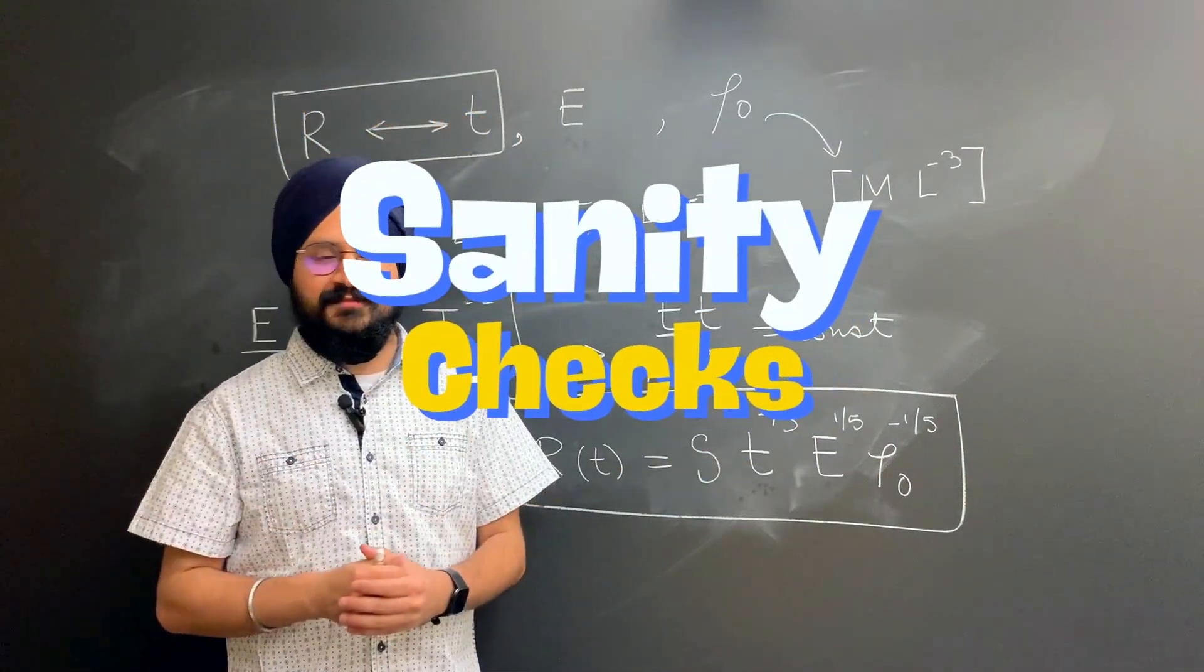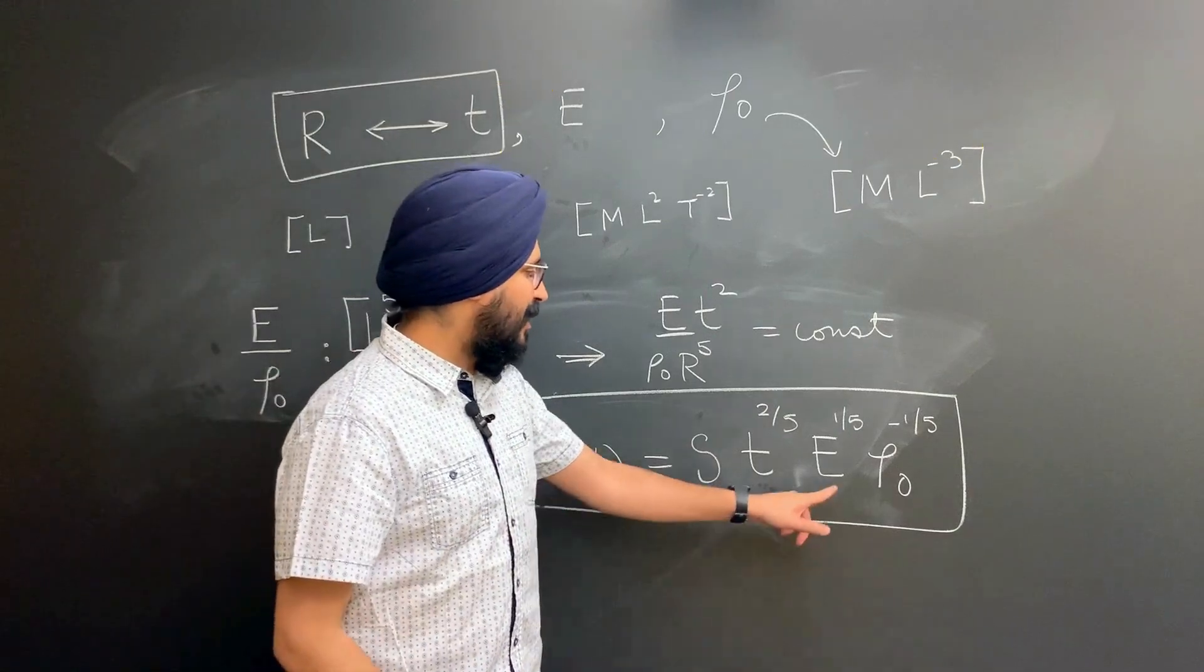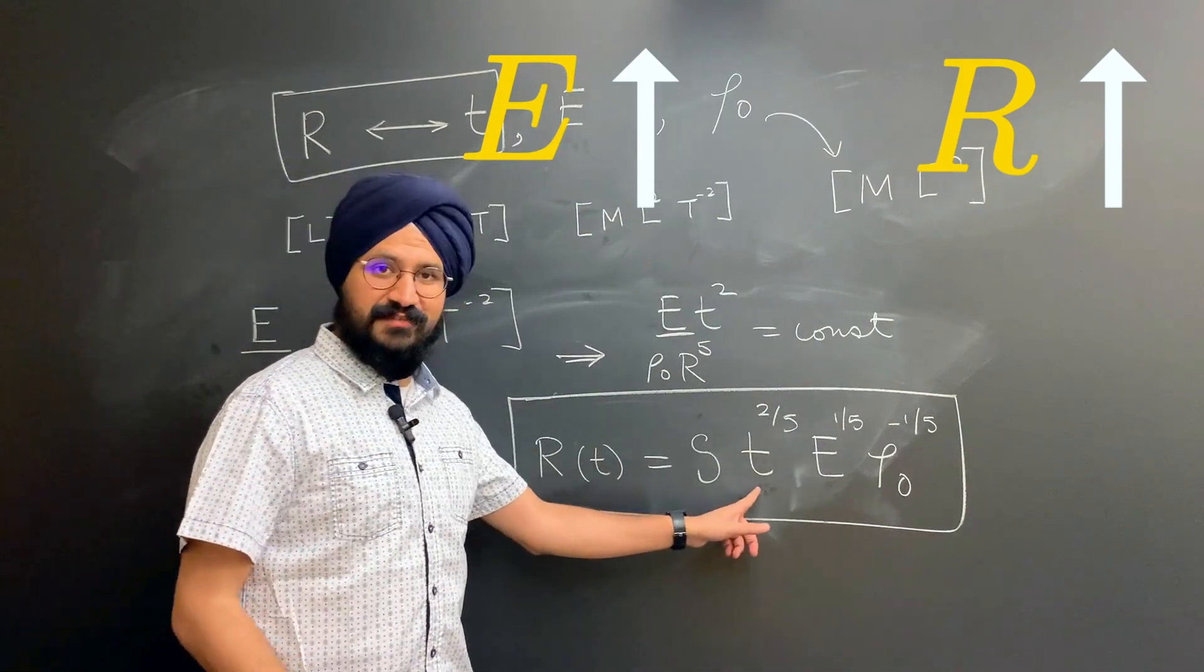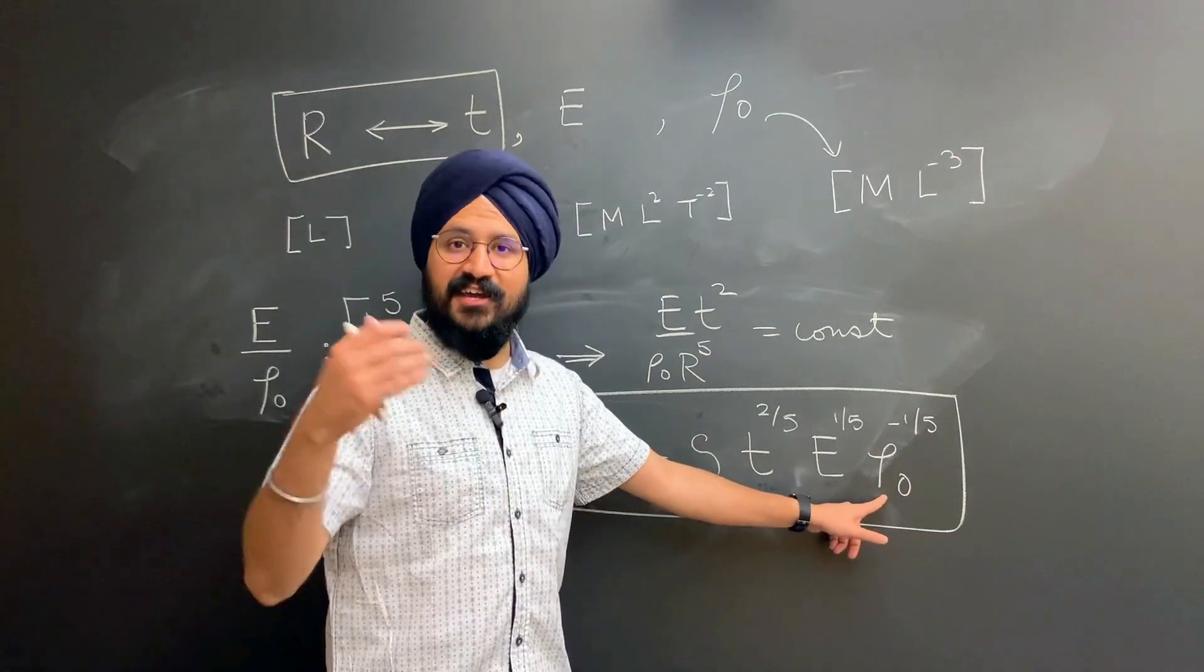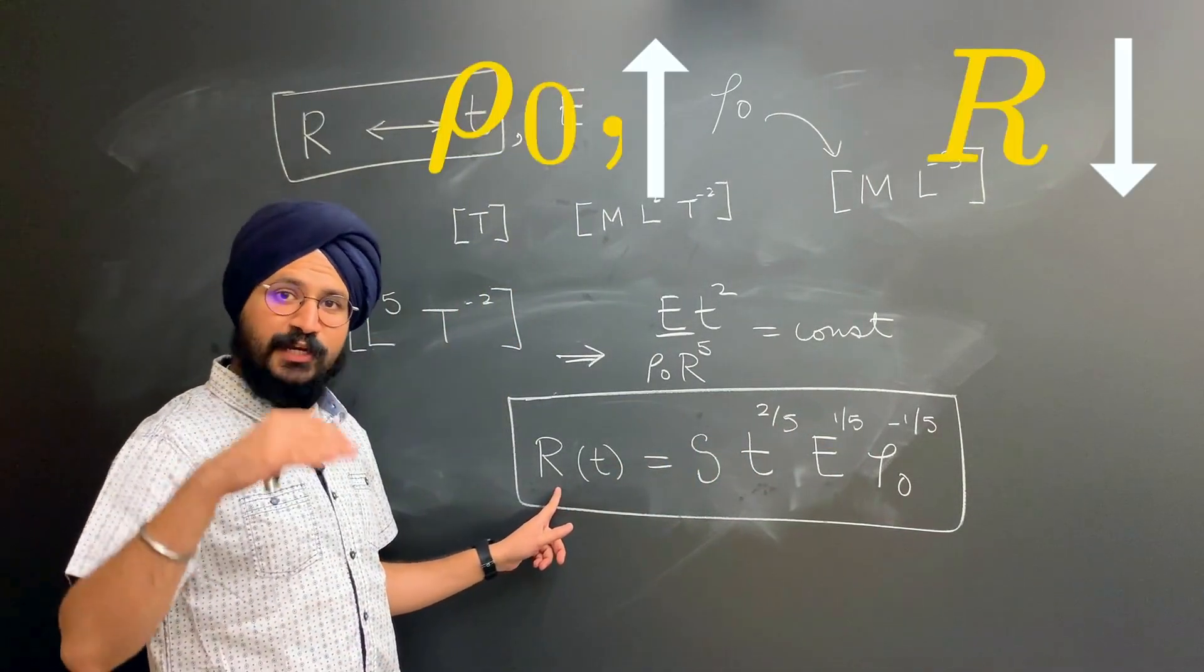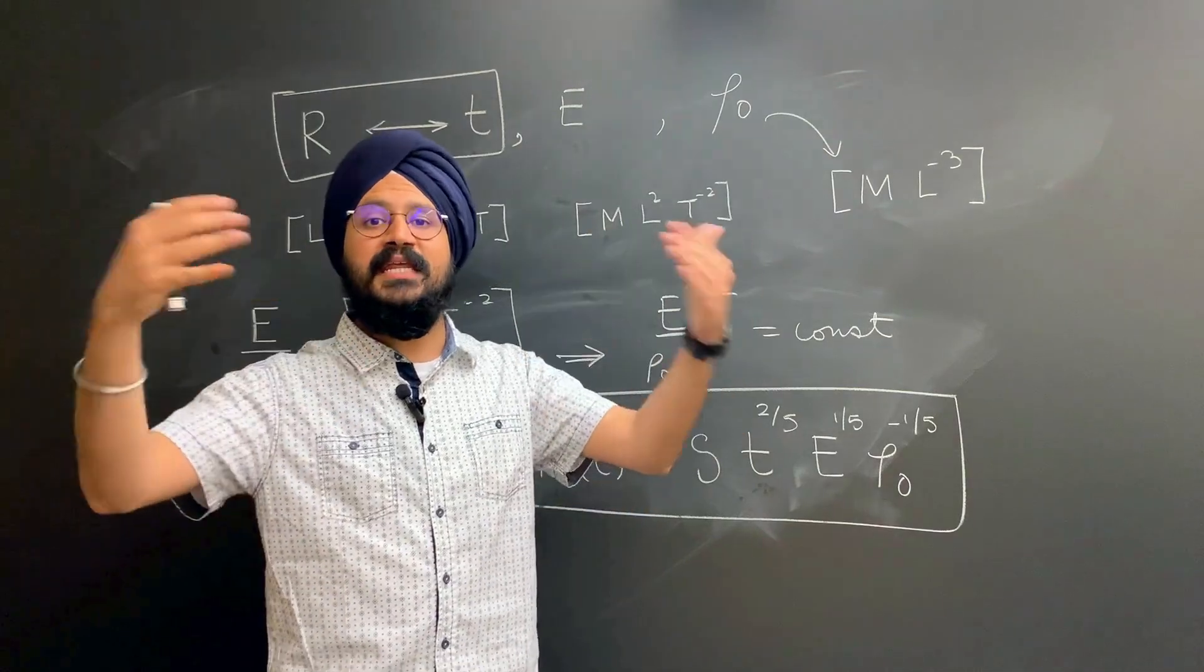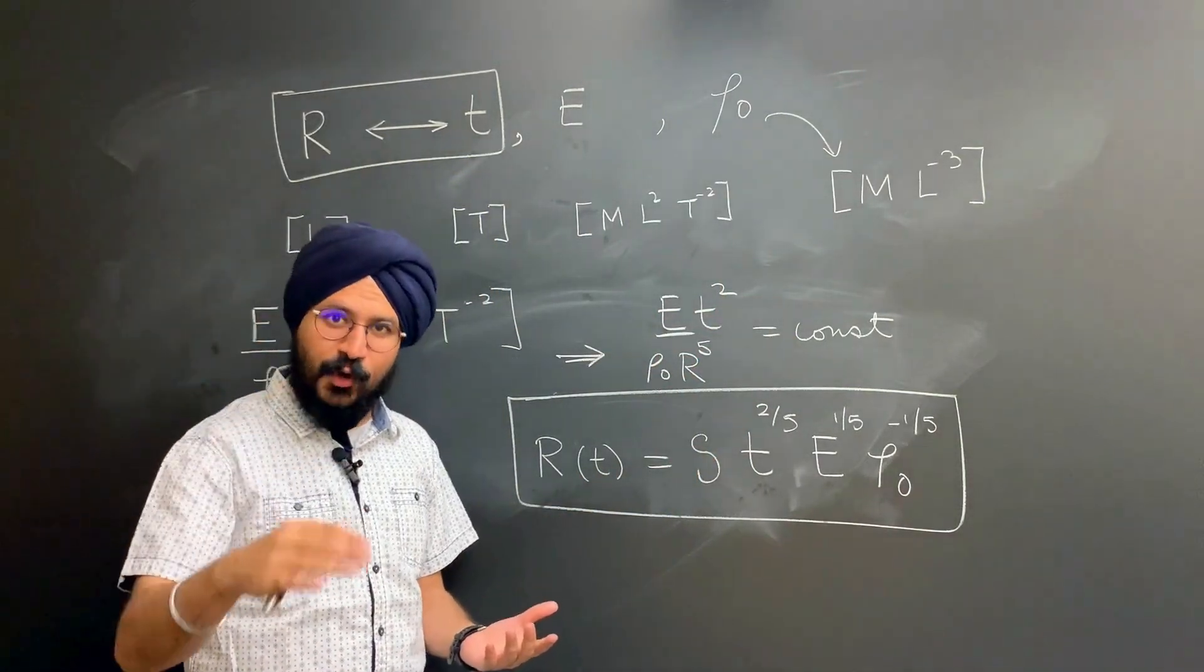Some quick sanity checks. R increases as time increases. If the energy of the blast is higher, the radius of the blast wave will also be larger for a given time. That sounds good. And finally, if I have a higher density of air, the radius of the blast wave is going to be lower. And that is because the blast wave will have to push against a denser envelope of air, many more air molecules to push through, thereby leading to a lower radius.